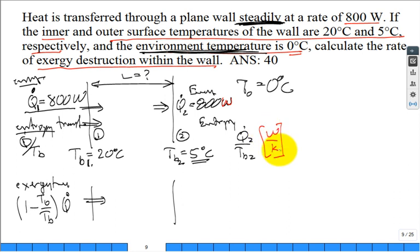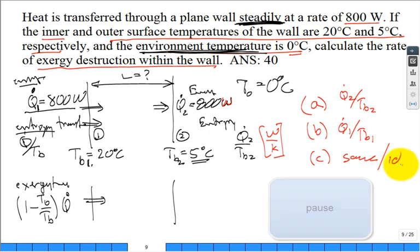Which one? This is a good clicker question. Which one is larger? The A is that Q dot 2 divided by TB2 is larger, or answer B, Q dot 1 divided by TB1 is larger. Which one of those two is larger? If you answer C, that means you're going to say they're the same, or that's equivalent to I don't know. Alright, 30 seconds is enough. Let's go ahead, close it out, show the results.